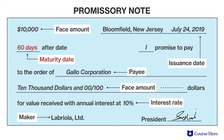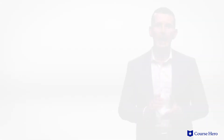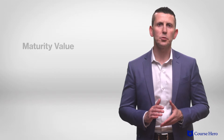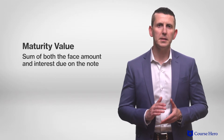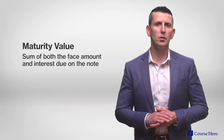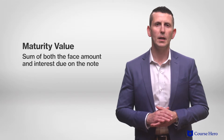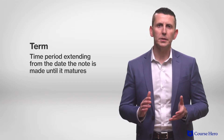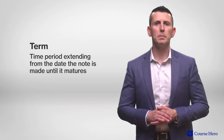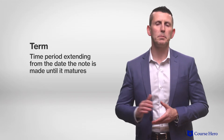The maturity date represents the date on which the maker must pay the ending note balance to the payee. The ending note balance is known as the maturity value of the note, or the sum of both the face amount and the interest due on the note. Finally, the term of the note is the time period extending from the date the note is made until it matures.